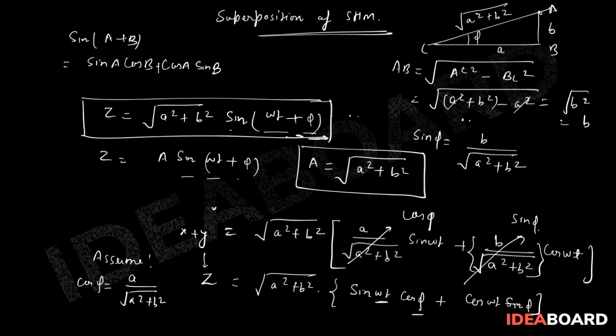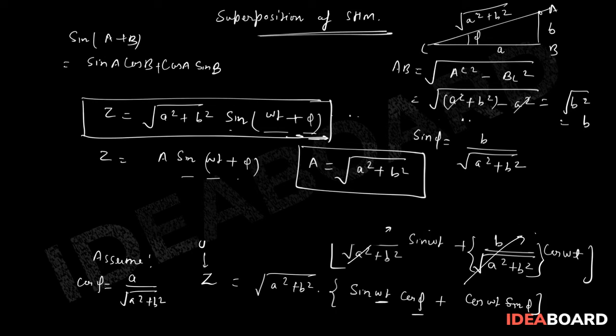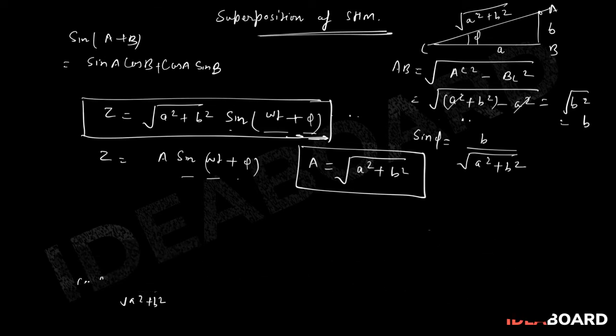Now, we can actually generalize this relation. We know that angle between two vectors. If two vectors are certainly theta angle, let's say vector P and Q, then the resultant vector will be given by under root of P square plus Q square plus 2PQ cos theta.